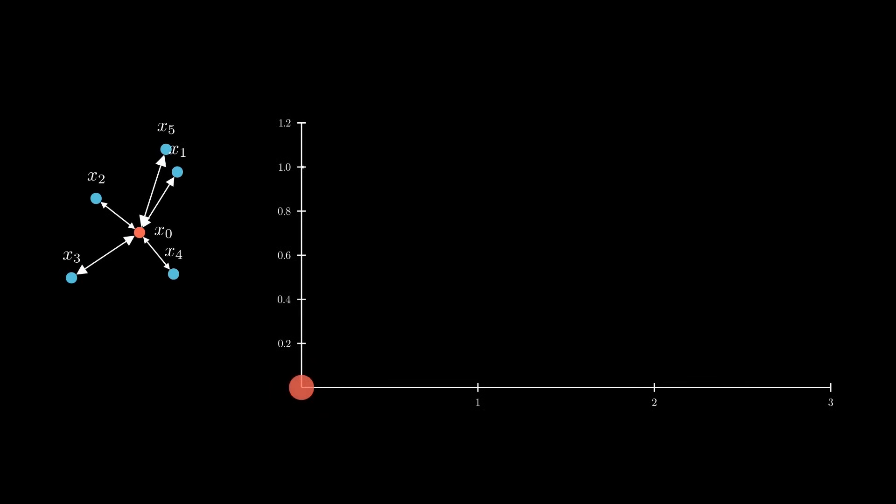The first step in the SNE algorithm is to turn the distances between a point and its neighbors into a probability distribution. More specifically, we convert these distances into a Gaussian distribution. You can think of this Gaussian distribution as the probability that a blue point is a neighbor of the red point. To get the probability for each point in our high-dimensional space, we use this formula, which is basically the exponential function applied to the distance between the points.